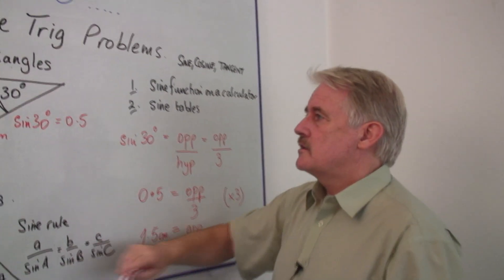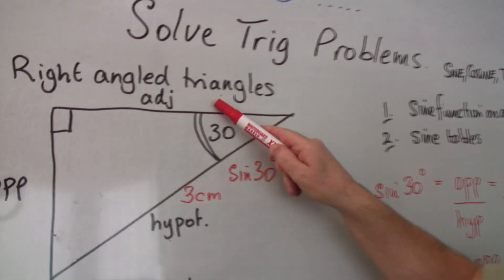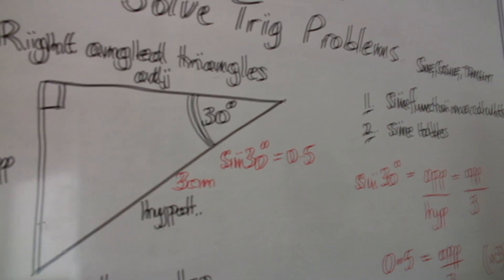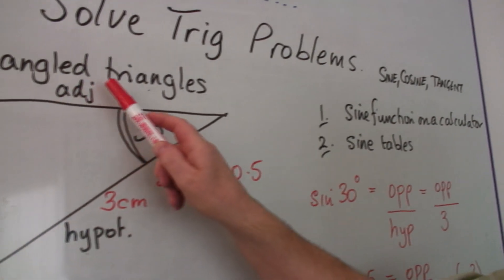Cosine is the adjacent length, the adjacent side divided by the hypotenuse. And the tangent is the opposite over the adjacent.